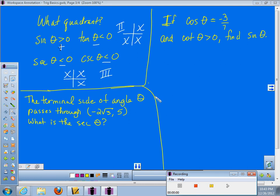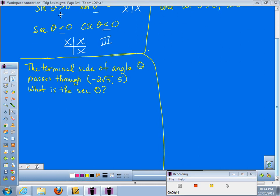So, this first problem tells us the terminal side of an angle, angle theta, passes through the coordinates negative 2 square root of 3, 5, and wants us to find the secant of that angle. In trigonometry, if you're ever in doubt, the answer to most questions is a picture is worth a thousand words. If you draw a picture of the triangle you're working with, you can usually figure out what you need to know.